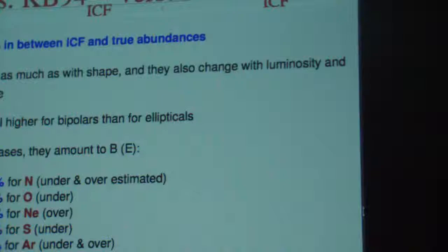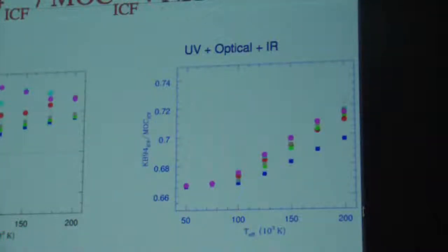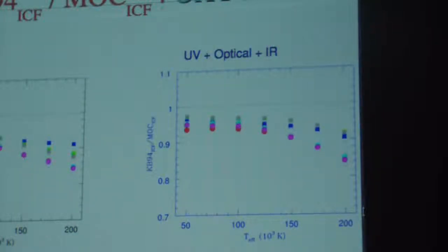For oxygen we also underestimate the total abundance using the standard ICF scheme. For neon, there is both under- and over-estimation. All together, the discrepancy between the two abundances varies a lot with central star temperature, as well as shape, luminosity, and chemical type. In general, the bipolar case is much worse than for the ellipticals, and there are cases where you are getting abundances that are 50% wrong. If you add the UV, there is some improvement, but the equations are still not good enough to solve the problem.